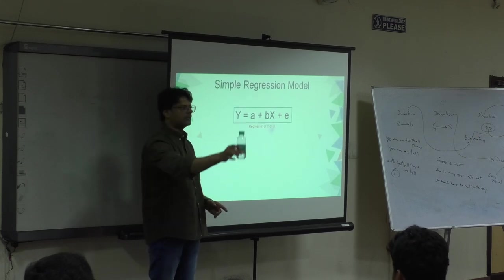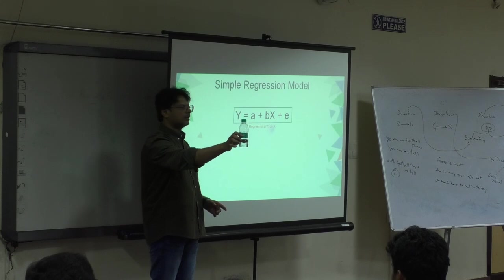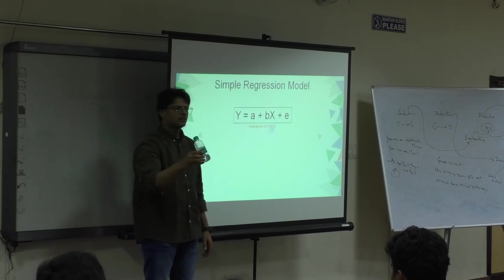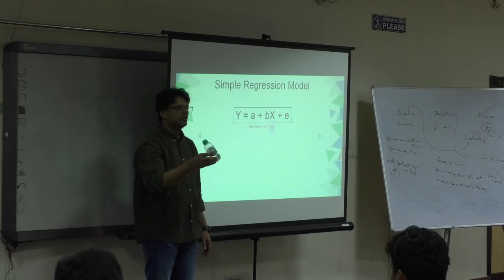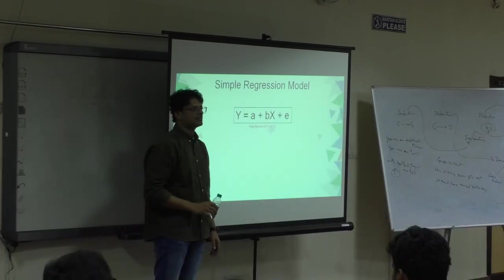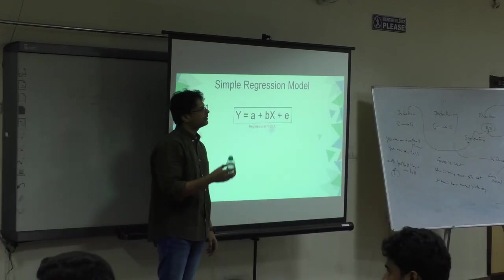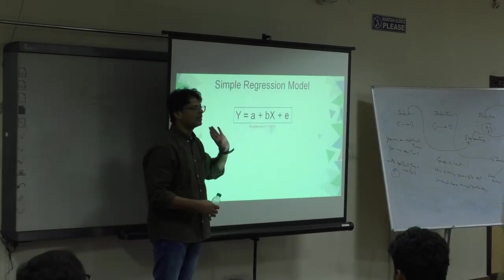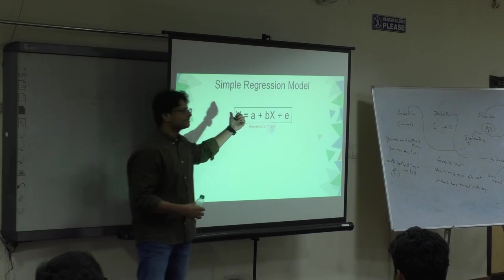In structural equation modeling for every observation there will be an error. If I tell you what is the height of this, everybody will give some observations. There will be some error in that. If I do a regression on that, it will give me curious results. But if I do structural equation modeling on that, it takes into account the error on the observational level, not the total equation.